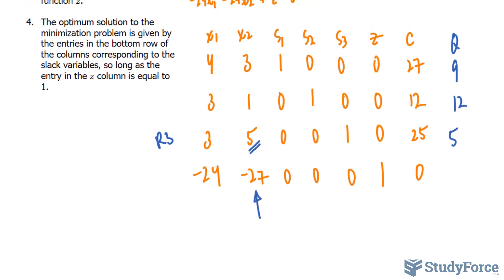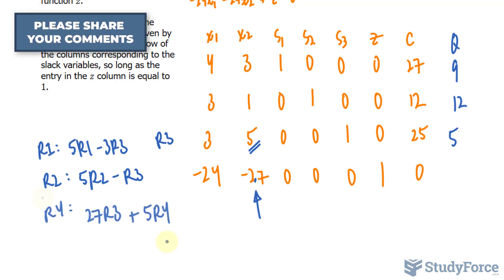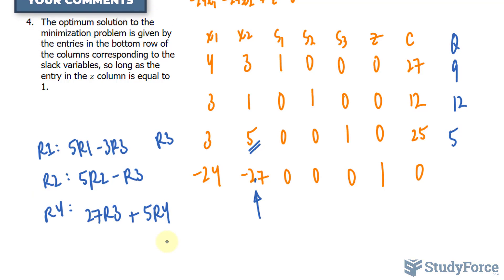We can start with row 1. To make this 3 into a 0, I can multiply all of row 1 by 5, and all of row 3 by 3, and then subtract those two answers. Let me document that. So for row 1, 5 times row 1 minus 3 times row 3. To make this 1 into a 0, row 2 this time, I'll multiply all of row 2 by 5 and minus row 3. So 5 times row 2 minus row 3. And lastly, to make row 4, specifically this -27 into a 0, I'll multiply all of row 3 by 27 and all of row 4 by a factor of 5 and add those two up. Now if you do this correctly, your brand new matrix should look like this.